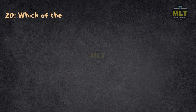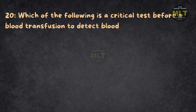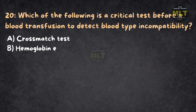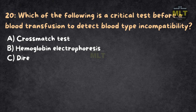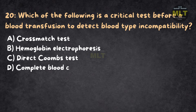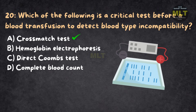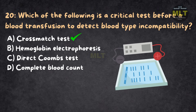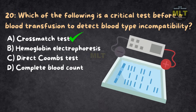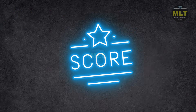Question 20: Which of the following is a critical test before a blood transfusion to detect blood type incompatibility? Option A: Cross-match test. Option B: Hemoglobin electrophoresis. Option C: Direct Coombs test. Option D: Complete blood count. Correct answer: A, cross-match test. The cross-match test ensures that the donor's blood is compatible with the recipient's blood, preventing transfusion reactions. Hemoglobin electrophoresis is used to diagnose hemoglobinopathies, not blood type compatibility. Hope you enjoyed — what is your score out of 20?